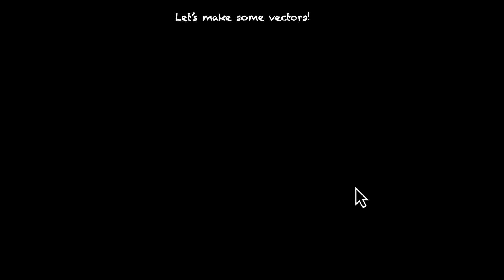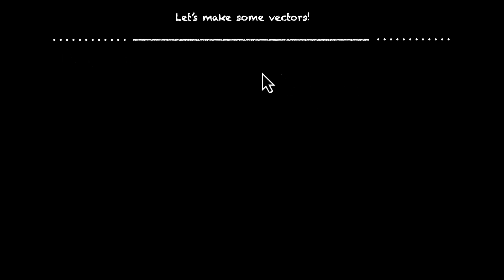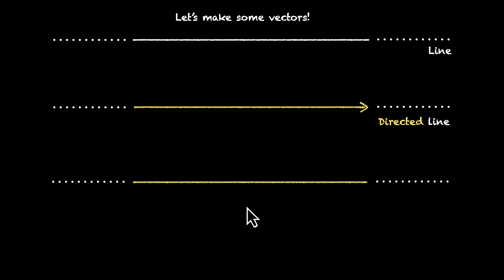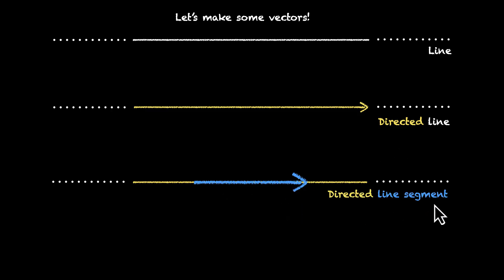So let's make some vectors. How do we make a vector? We need direction and we need length — we need magnitude. So let's start with a line. This is the line; it never ends, it moves in both directions. Let's direct this line — let's give it a direction. Let's say that this line moves in the right direction, so we have a directed line. We're moving from this direction to this direction, but we also need length. So for this line, we move from this point to this point in this direction. This blue thing is a directed line segment, and that's what a vector is — a directed line segment.